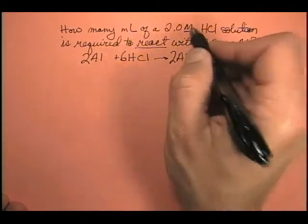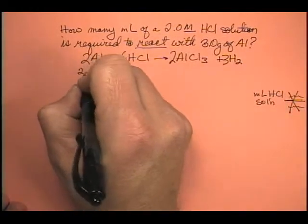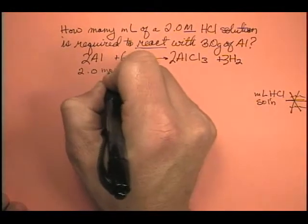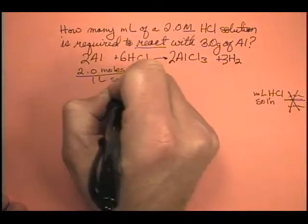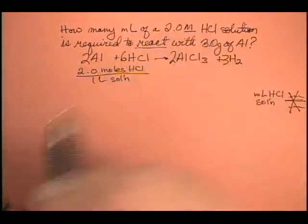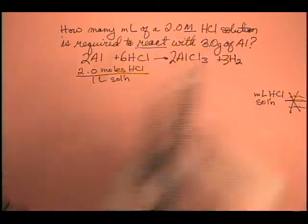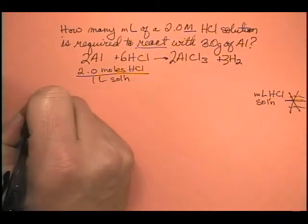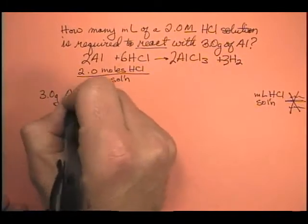Also keep in mind that this 2.0 molar, remember that's 2.0 moles of HCl per 1 liter of solution. That's what that means. So we're not going to start with that. So the only thing we can start with then is 3 grams of aluminum. So let's go ahead and start with 3 grams of aluminum.